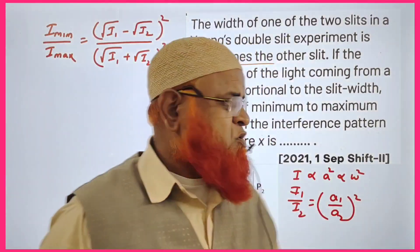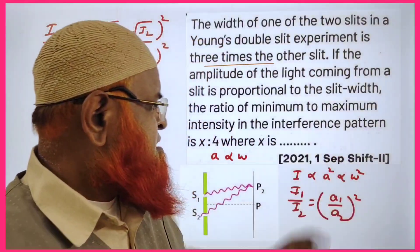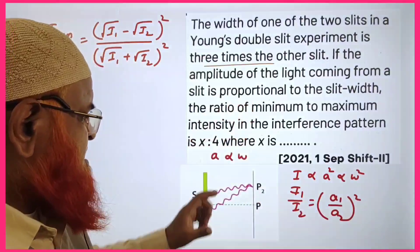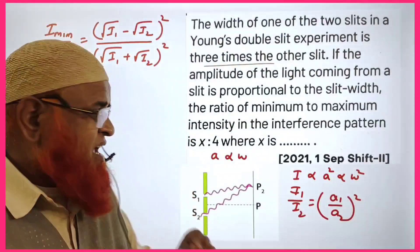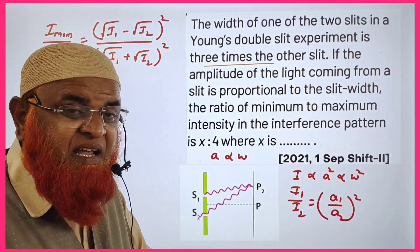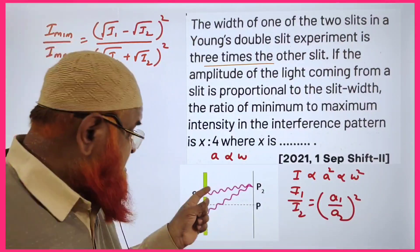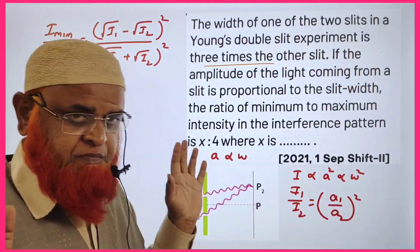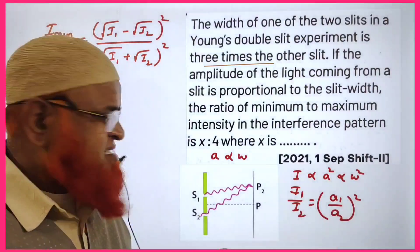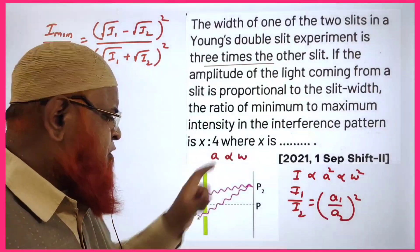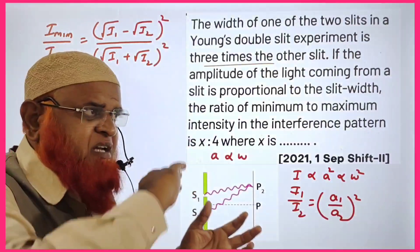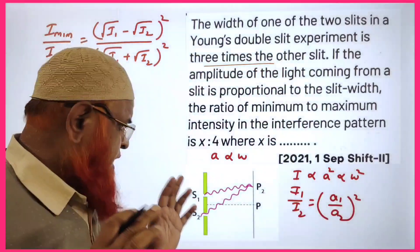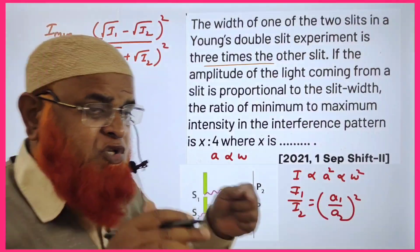This is a previous year question from 2021 JEE Mains. It asks about the relation between intensity, width of the slits in the double slit experiment, and amplitude. You should remember that width is directly proportional to amplitude — the greater the width, the greater will be the amplitude.